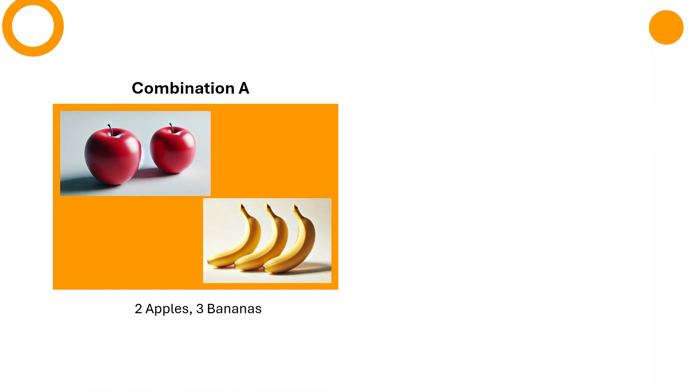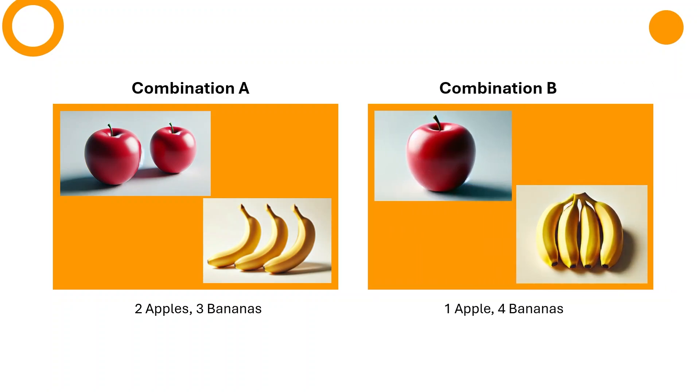Imagine you love apples and bananas and I give you a choice between two combinations: two apples and three bananas or one apple and four bananas. If both of these combinations make you equally happy, it means that you are indifferent between the two combinations and we can plot them using a tool known as indifference curves in economics.